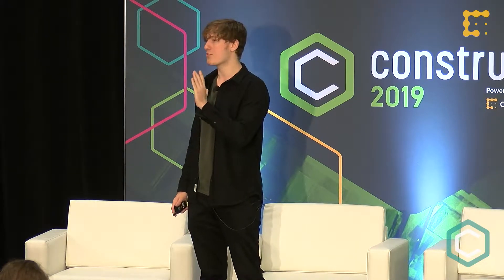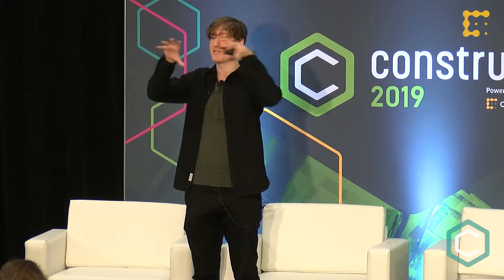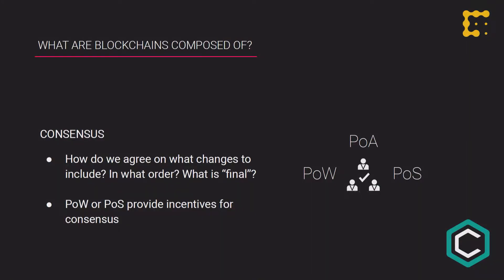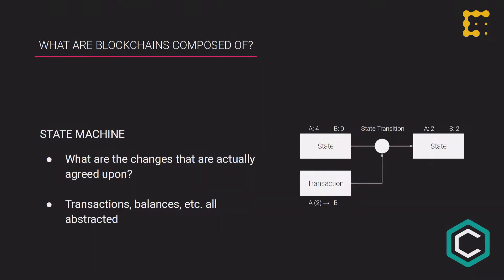With Polkadot you can build something much closer to a full blockchain in terms of control over its own capabilities and how blocks are authored, but the security is not provided by the chain itself — it's inherited from a root. To recap: a blockchain consists of a consensus algorithm (how we agree on changes) and a state machine (which changes have been agreed upon). On Substrate, what people are really writing is just their state machine.